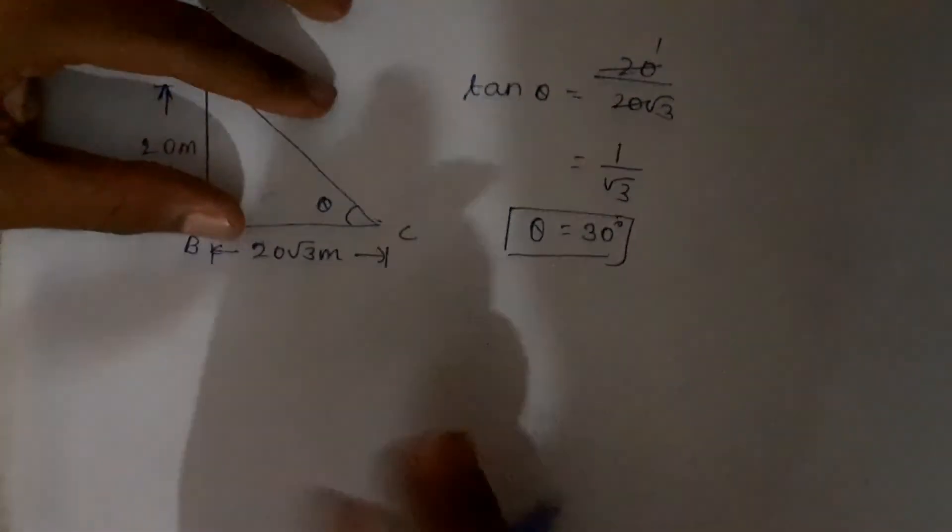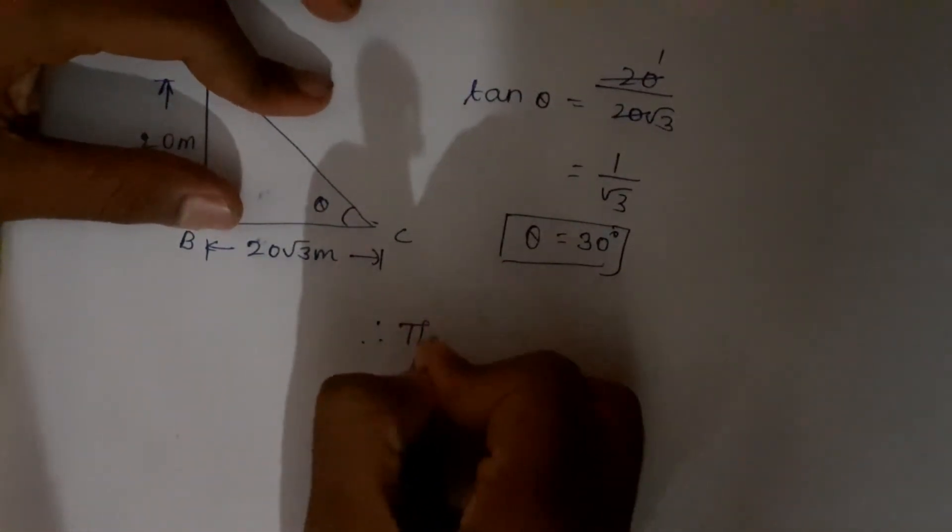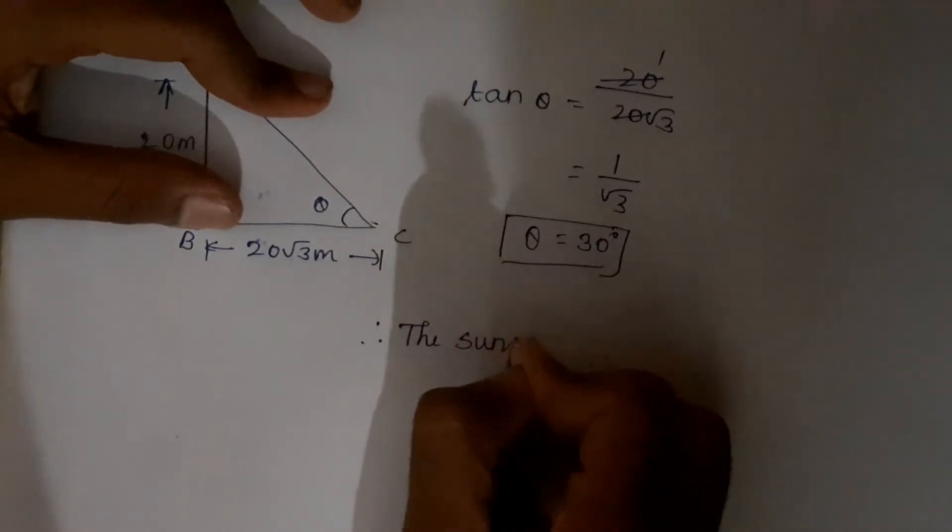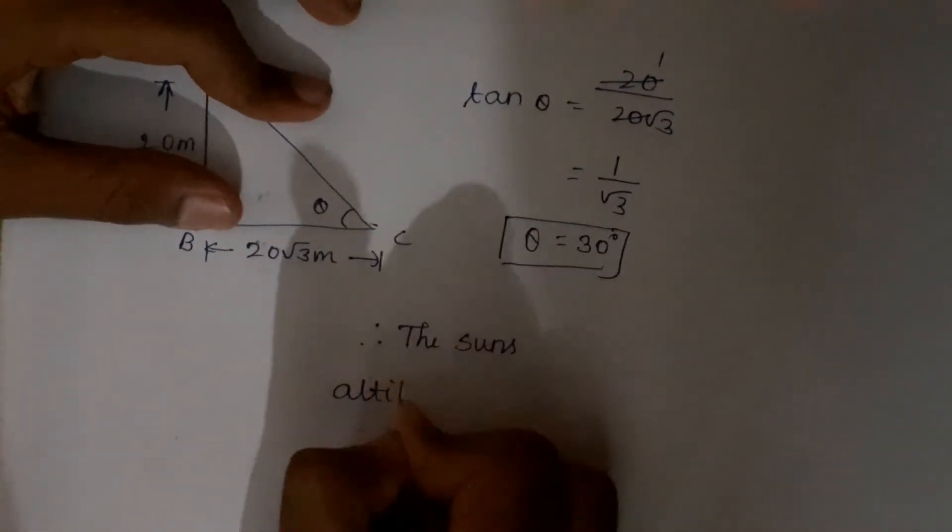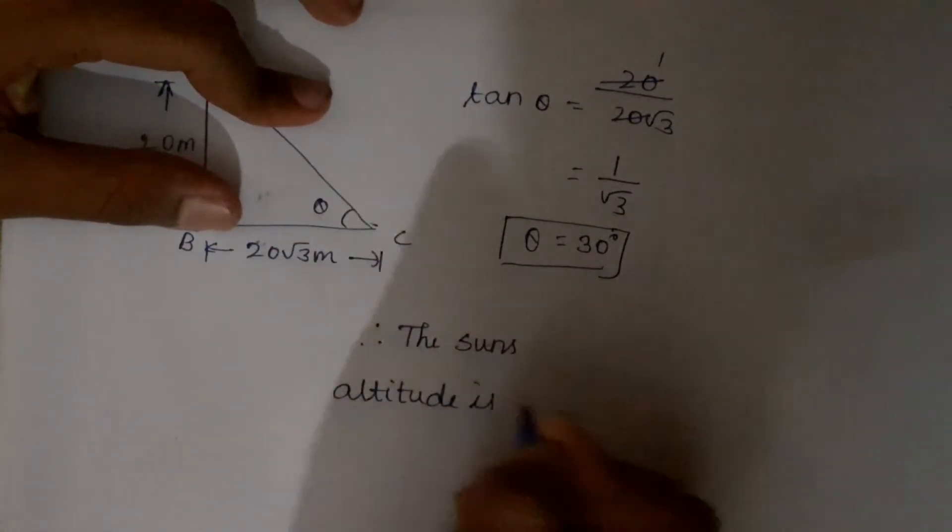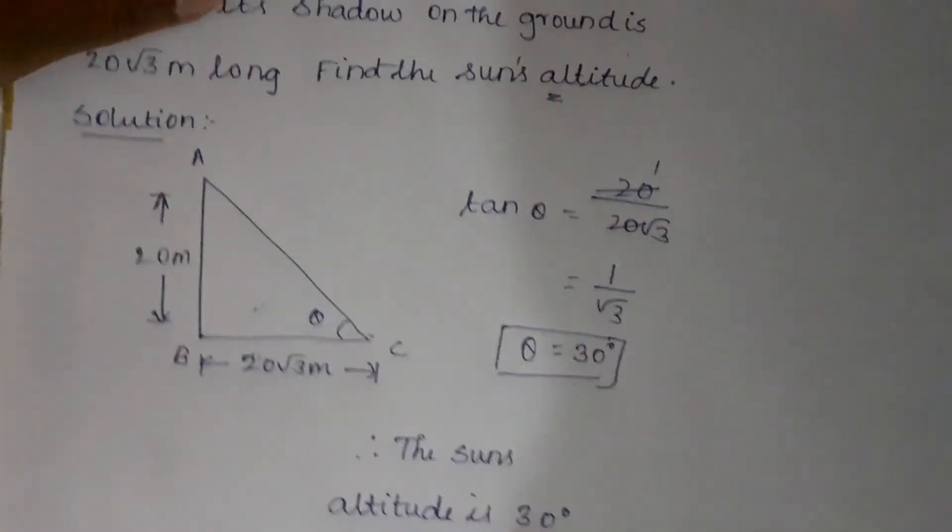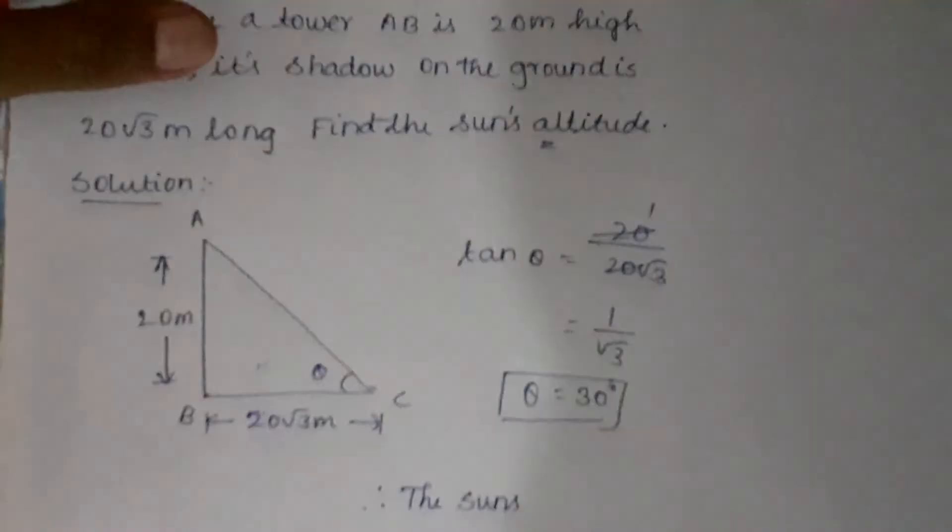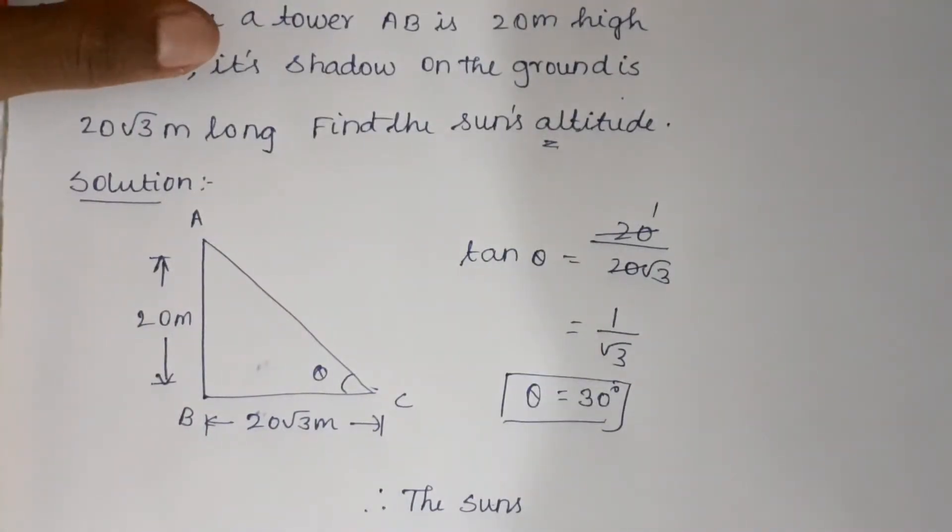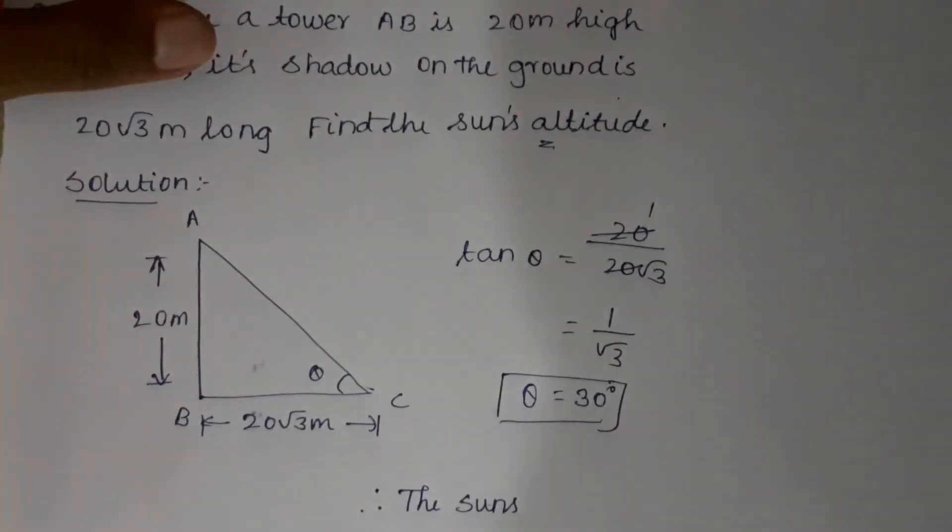Therefore, the sun's altitude is 30 degrees.